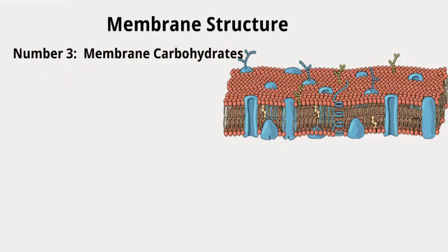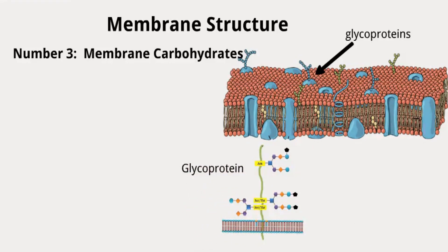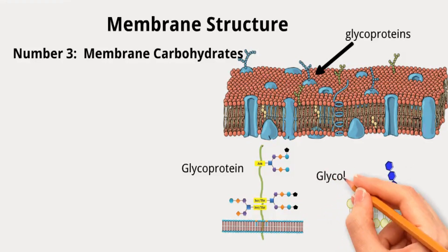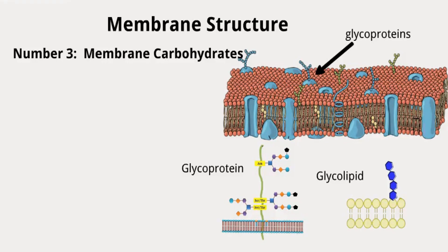Number three, membrane carbohydrates. Carbohydrates are present in the plasma membranes of eukaryotic cells, making up about 2–10% of the membrane's weight. Over 90% of these carbohydrates are linked to proteins, forming glycoproteins, while the remaining carbohydrates are linked to lipids, forming glycolipids. These carbohydrates are oriented outward into the extracellular space. Glycosylation — the addition of carbohydrates to proteins and lipids — is a complex process. The carbohydrate chains on glycoproteins are typically short, branched oligosaccharides with fewer than about 15 sugar units per chain.